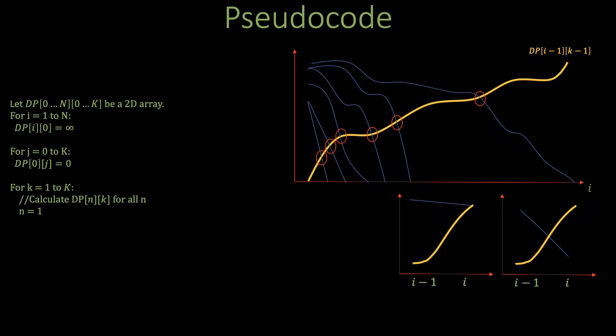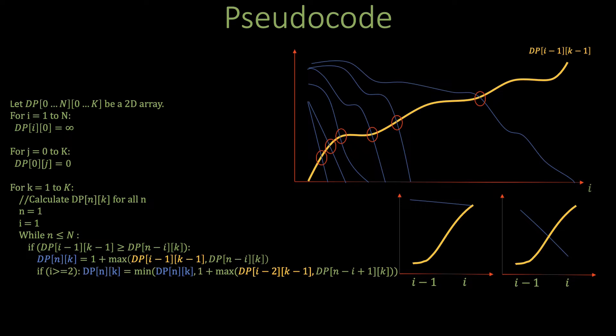Namely, set n equals 1 i equals 1 and while n is less than or equal to capital N we check if dp[i-1][k-1] or the yellow curve is above dp[n-i][k] or the current blue curve. If it is then we know that the intersection for n happened at index i or i minus 1 so we calculate dp[n][k] and increase n by 1. Otherwise, then we just move index i one step forward.